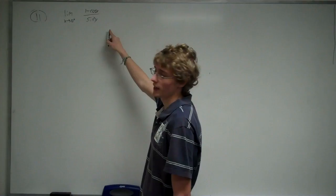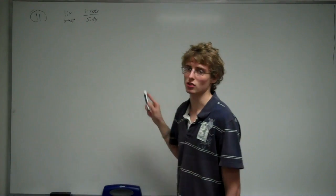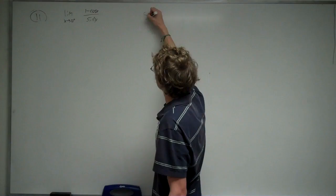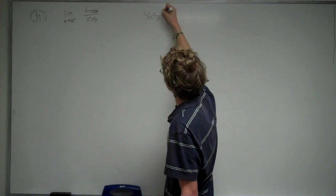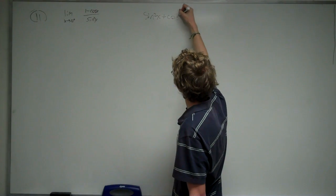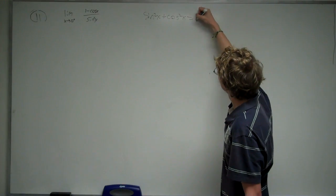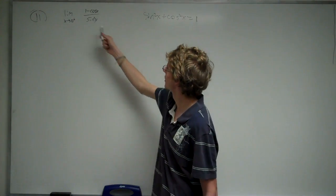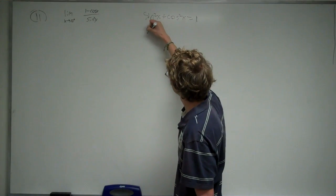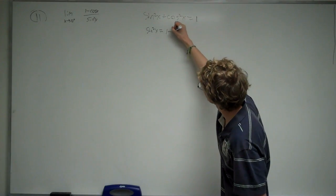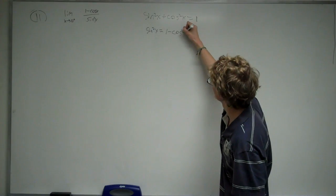Now, the hint tells us to rewrite the equation in terms of a trig identity. Now 1 equals 1. From this, we can derive that the sine squared of x equals 1 minus the cosine squared of x.